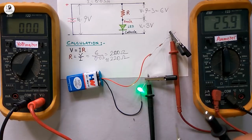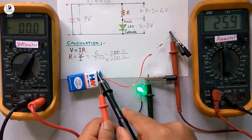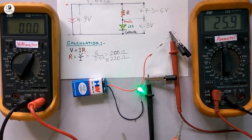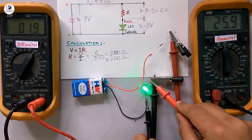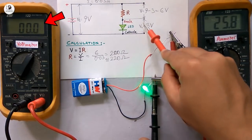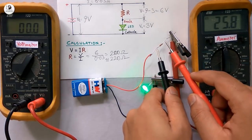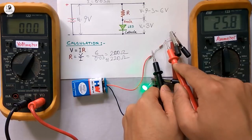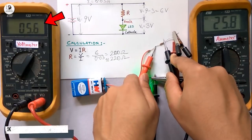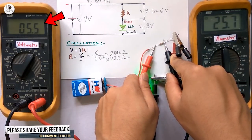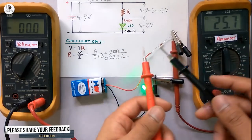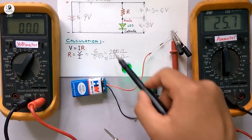Now we will measure the voltage. First, we will measure the input voltage. You can see the voltage is 8.8 volt, which is approximately 9 volt. Next, we will measure the voltage across the LED. If we measure the voltage across the LED, it is 3.1 volt, which is approximately 3 volt. And now we are going to measure the voltage across the resistance. You can see the voltage across the resistance is 5.6 volt. During calculation, we had calculated the voltage across the resistance would be 6 volt. So all the data you can see practically matches what we calculated earlier.